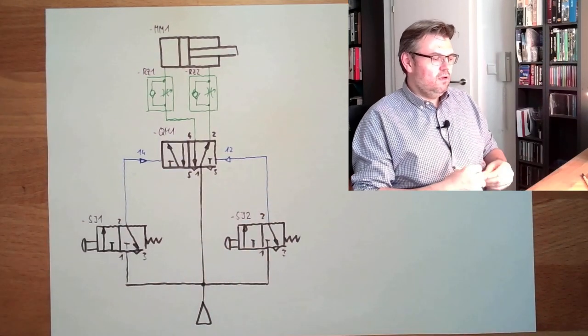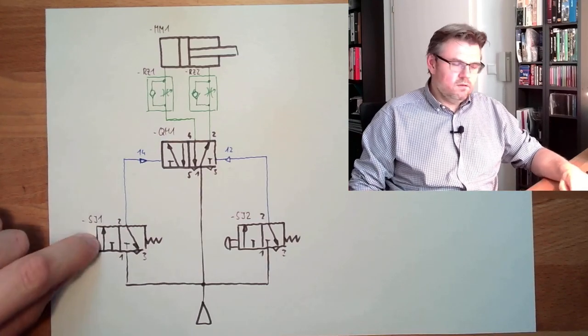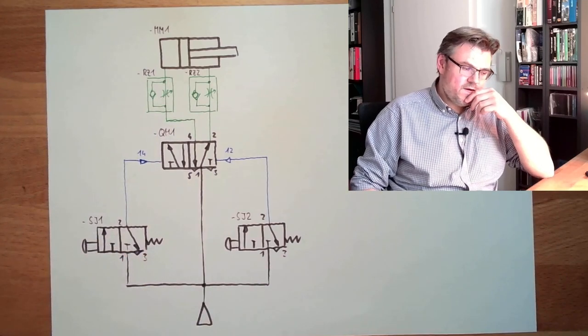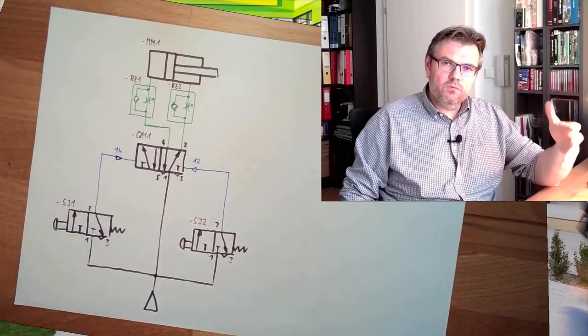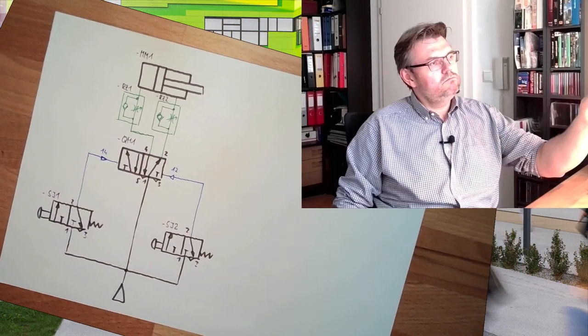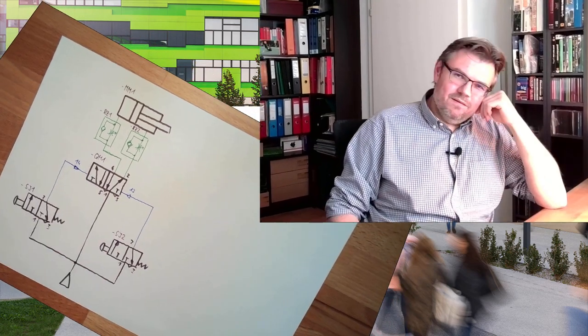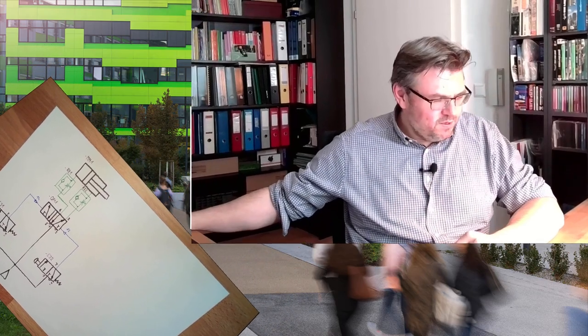And now I am done. Now this looks like a plan. This button for going outwards, this button for going inwards. Every time I release it, this QM1 will stay where it is because it's an impulse valve. Problem solved.